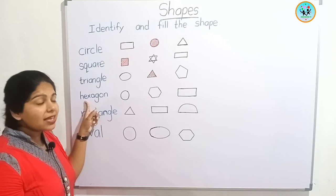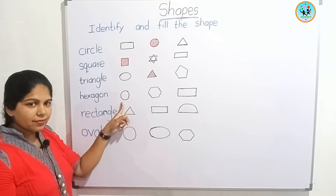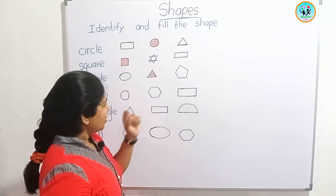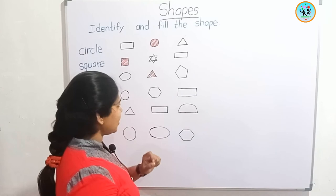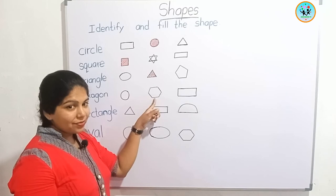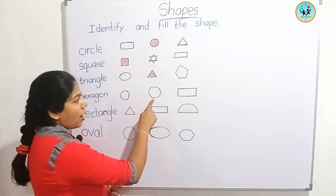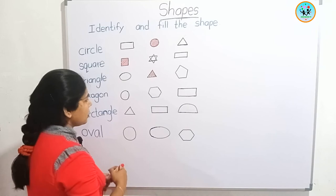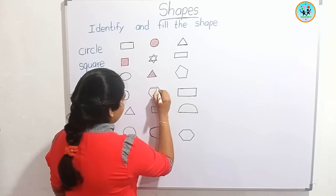Next one is hexagon. What is this? Is this hexagon? No. What is this? Yes, it is a circle. You know this — what is this? Yes, it is a rectangle. The middle one is hexagon. How many sides are here? One, two, three, four, five, six. These six sides are equal. We found hexagon — now we are going to fill it.